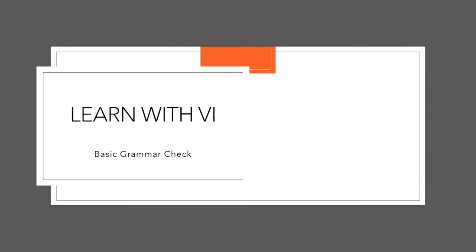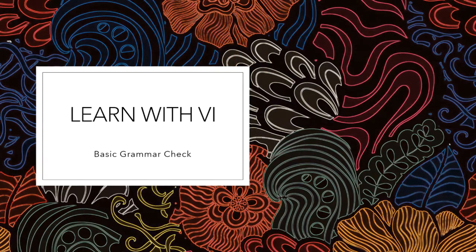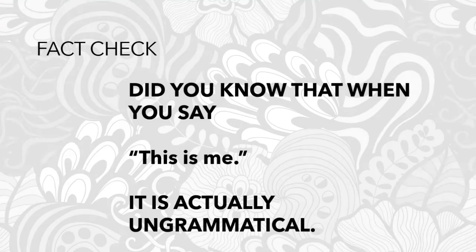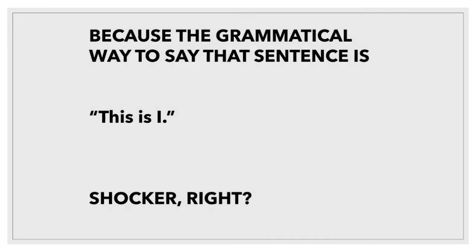Hello, welcome to Learn with V. This is Basic Grammar Czech. Did you know that when you say 'this is me,' it is actually ungrammatical? Because the grammatical way to say that sentence is 'this is I.' Shocker, right?